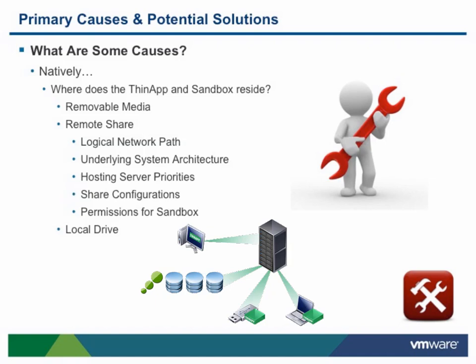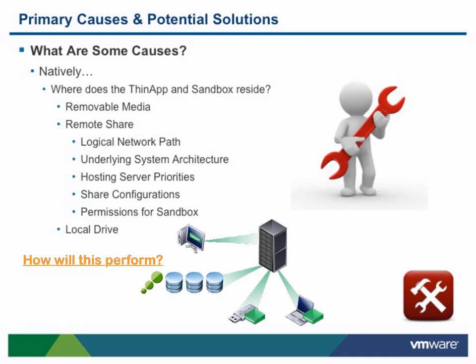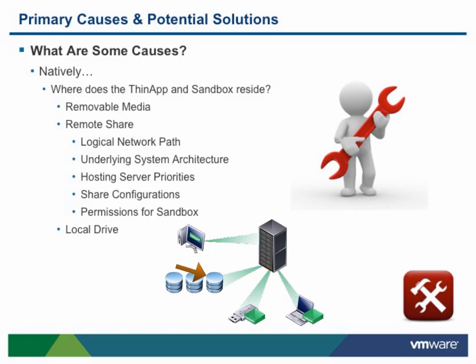It is important to understand it is not wrong to place ThinApp packages and/or sandboxes upon network shares. What is important is how doing so may affect your virtualized app performance, as it may cause perceived issues due to the many network environment variables. Some common things to check are the logical path and/or number of hops between the file share and desktop, whether the desktop is physical, virtual, or remote. There is no recommended configuration here as it is completely environment dependent. For example, 30 hops on a 10 gigabit network might actually be perceptibly quicker than 3 hops on a 10 megabit network, or vice versa, depending upon other network environment conditions.